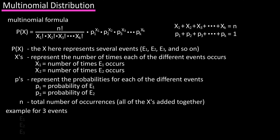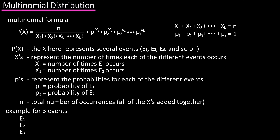So if we had three events — e1, e2, and e3 — and event one occurred three times, event two occurred four times, and event three occurred once: x1 equals three, x2 would equal four, and x3 would equal one. And n would be the total number of occurrences of those events — three plus four plus one — which equals eight, and this is the number of trials.